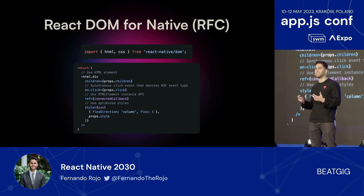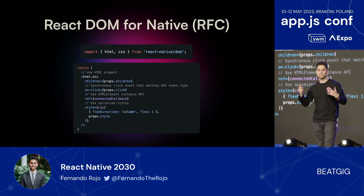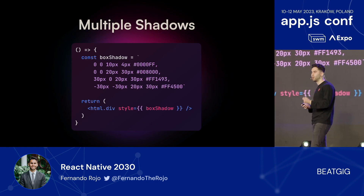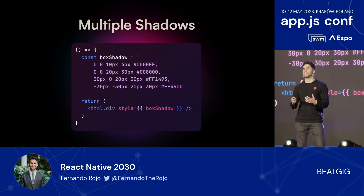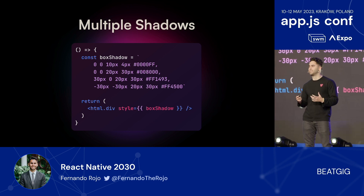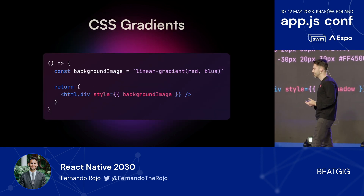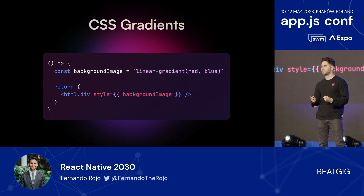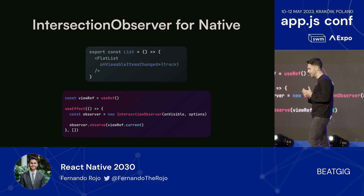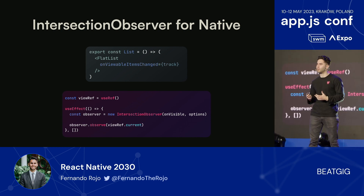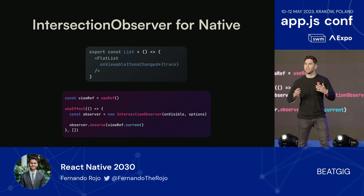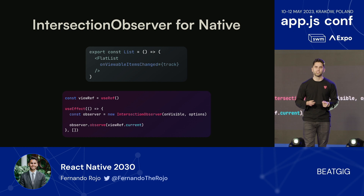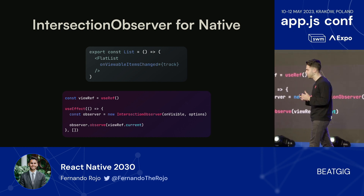This RFC opens so many doors. All those components displayed earlier can get rolled up into the style prop. We could finally use multiple shadows with a CSS shadow syntax, which is just so much more intuitive than React Native's. If you want a gradient, just use the style prop instead of a LinearGradient component. If you want to track when an element has entered the view — which is super annoying to do right now — you don't have to change your whole screen to be a FlatList. You can get any arbitrary view and track when it's entered the screen with an IntersectionObserver, just like we can on web.